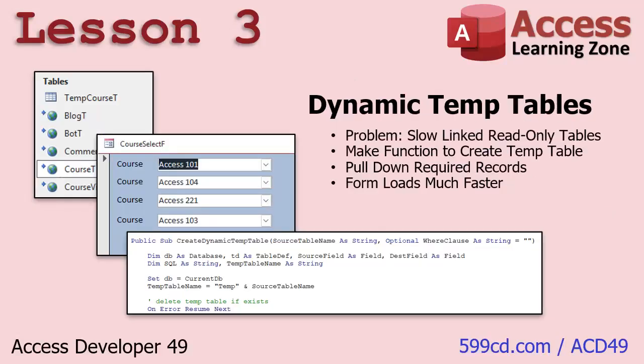In lesson three, we're gonna focus on dynamic temp tables. If you've got a split database — whether it's on the network, on the internet, using an SQL server, or just a back-end Access database — and you've got forms that pull a lot of data in from other tables, like a list of customers, orders, or products, you've probably noticed that combo boxes or other controls on your forms are running slowly. In this lesson, I'm gonna teach you how to make them faster. When the form loads, or even when the database loads, you're gonna copy that data down to a temporary table. We're gonna make it table-agnostic, so it won't matter what fields are in your table — you just give it the table name and it'll create the back-end table copy for you.